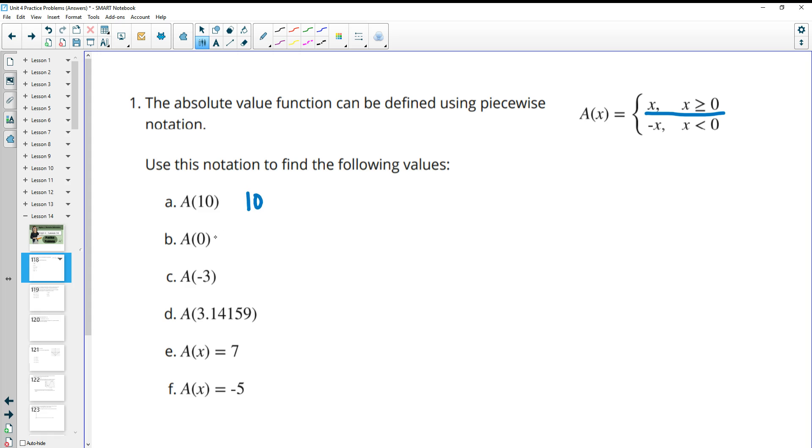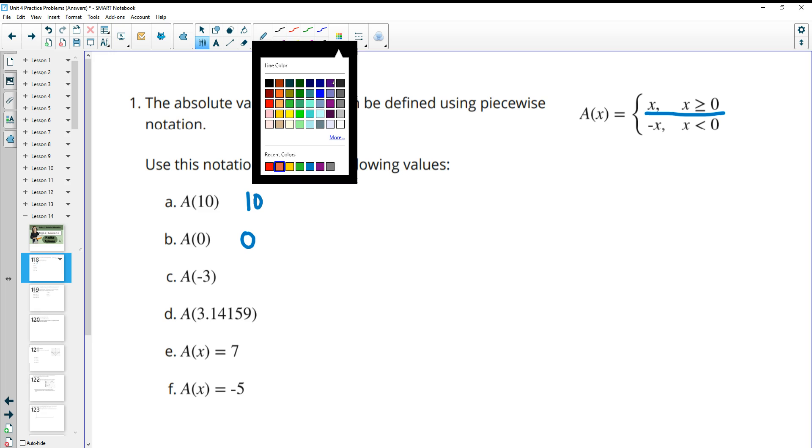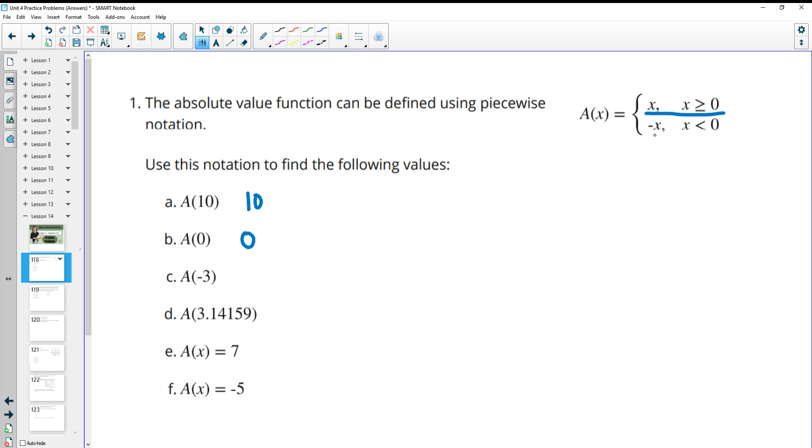Zero is greater than or equal to zero, so we're going to plug it into this top part of x, so it's just going to be equal to itself. Negative three is less than zero, so this is going to kick back the opposite of negative three, which is positive three.